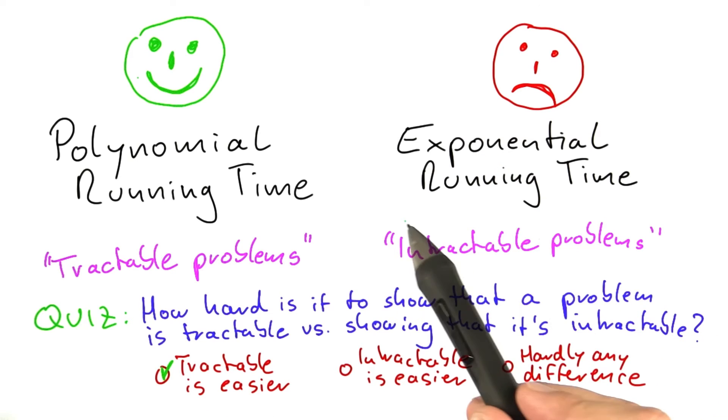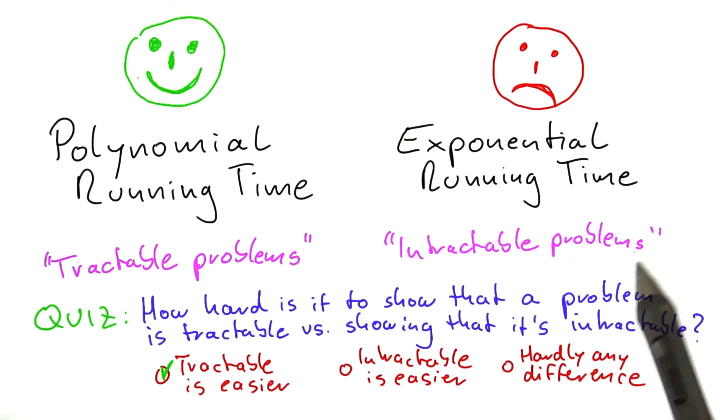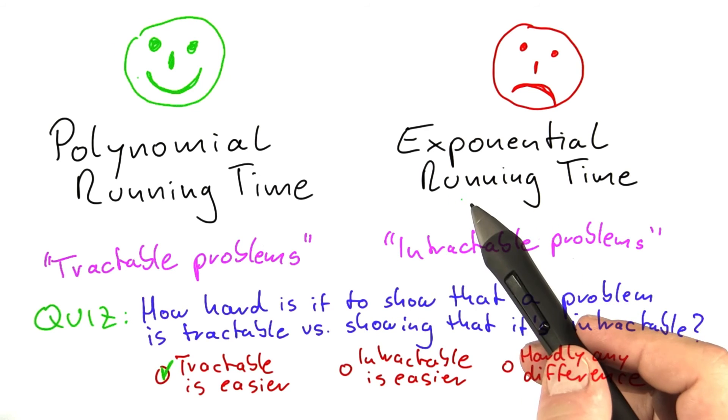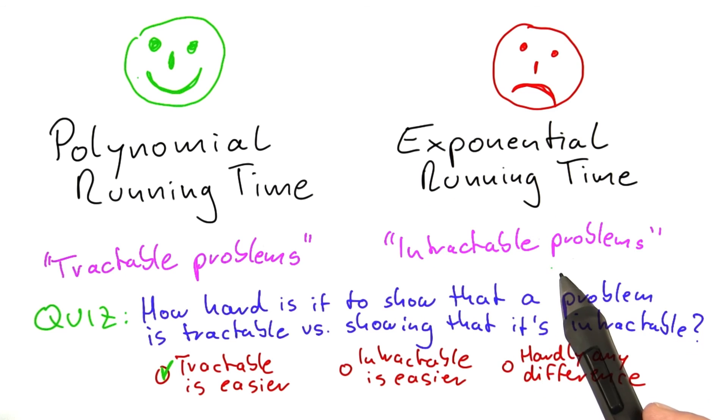On the other hand, if you want to show that a problem is intractable, what you would have to show is any possible algorithm—so not only the algorithms that you can come up with, not only the algorithms that somebody else can come up with, but any algorithm that somebody could come up with at any point in time must still have exponential running time. So just stating a single algorithm or even 100 algorithms is not enough to show intractability.